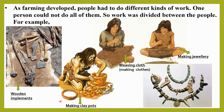As farming developed, people had to do different kinds of work. One person could not do all of them, so work was divided between the people. For example: making wood implements, making clay pots, weaving clothes, and making jewelry. When farming developed, all the work was divided between themselves because one person could not do all of them.